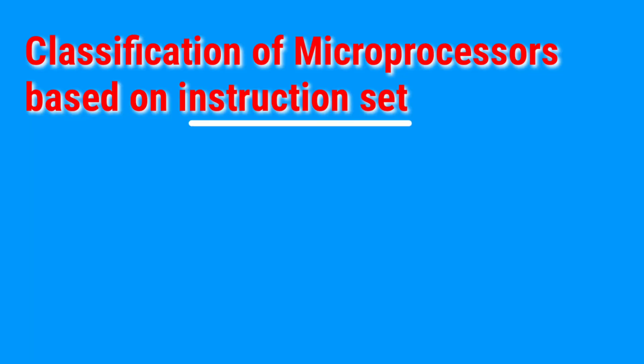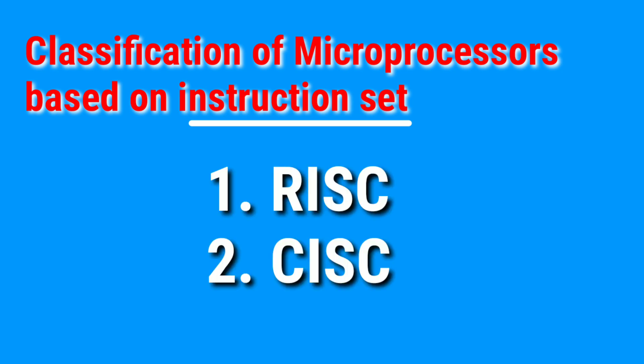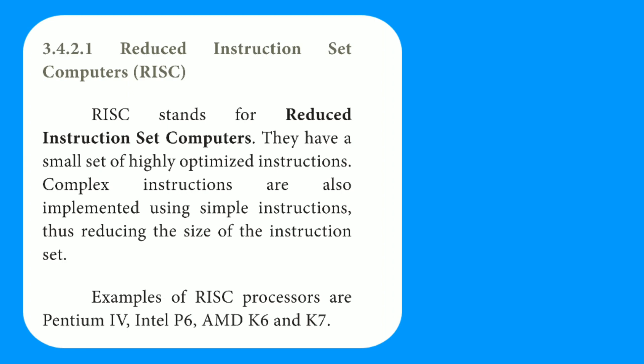The instruction set is of two types: one is RISC and another one is CISC. First, RISC — it stands for Reduced Instruction Set Computer.